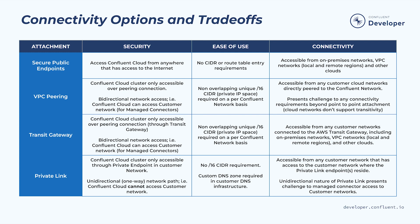With VPC or VNet direct peering, your cluster is only accessed over the peering connection. It requires a /16 CIDR range for the Confluent network and provides bi-directional connectivity from your cloud network to the Confluent Cloud network. This allows you to run managed connectors to access your private network data sources and data sinks.